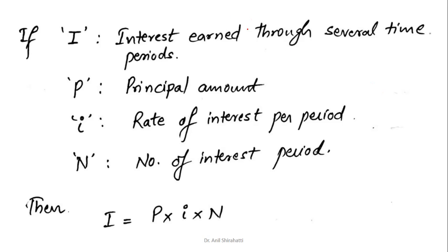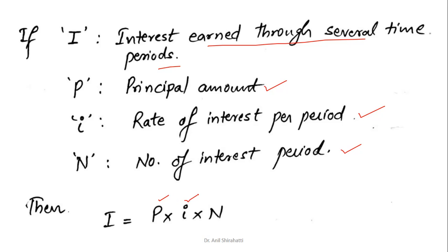We use some symbols for this. I is the total interest earned through several time periods. P is the principal amount — the amount we have deposited or taken as a loan. i is the rate of interest earned per period, and N is the number of interest periods. The total interest earned is given by: I = P × i × N, where P is the total amount invested or taken as a loan, i is the rate of interest, and N is the period for which the interest is defined.